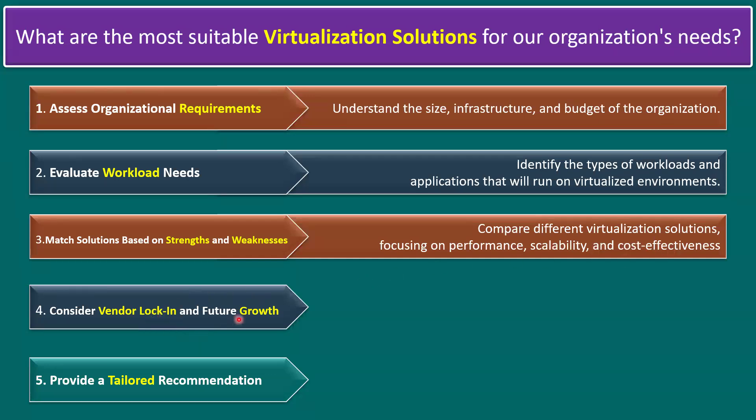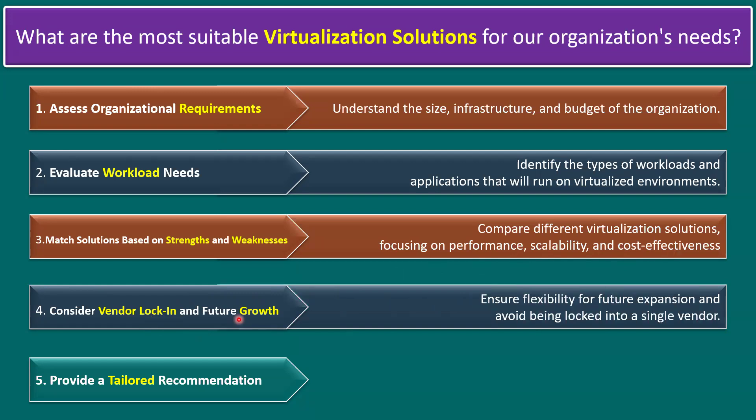The fourth point is to consider vendor lock-in and future growth — ensure flexibility for future expansion and avoid being locked into a single vendor. For example, VMware vSphere provides flexibility: even with ESXi hosts, you can still integrate with Nutanix HCI. Similarly, Nutanix AHV (Acropolis Hypervisor) can run not only on Nutanix physical appliances but also on other hardware like HP. We must validate this flexibility for whichever vendor solution we propose.